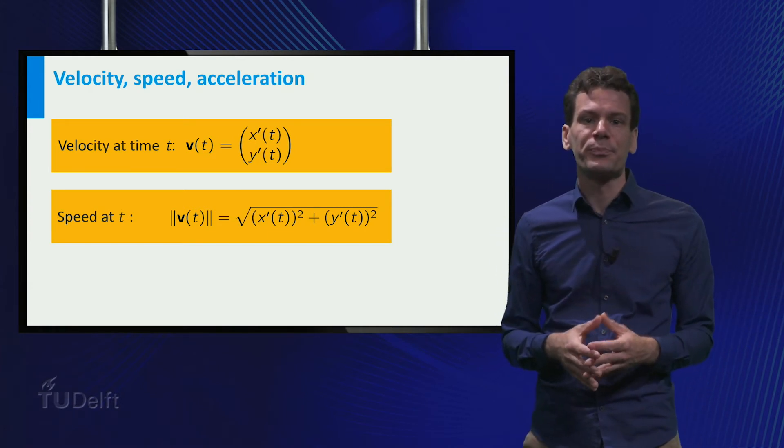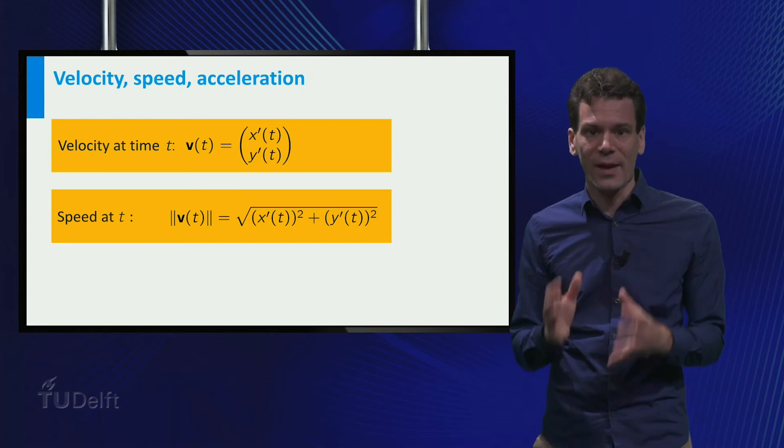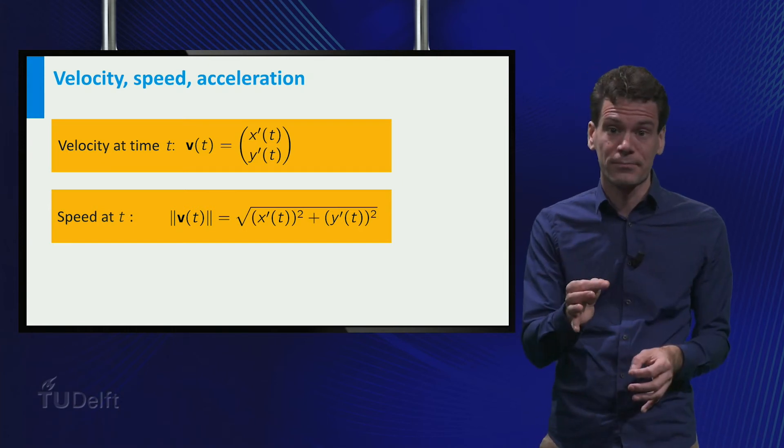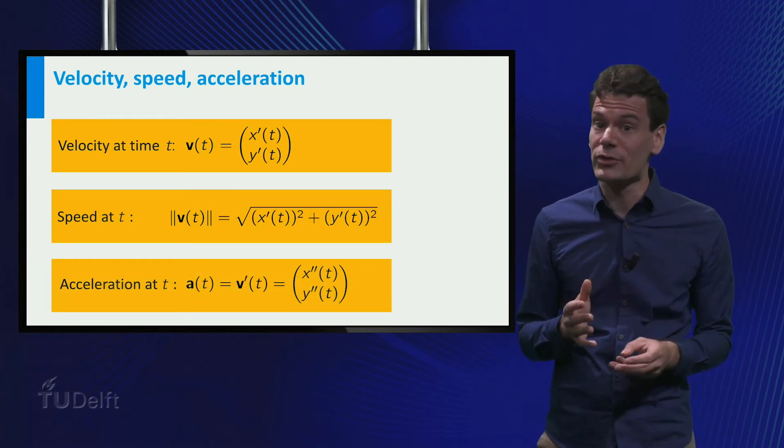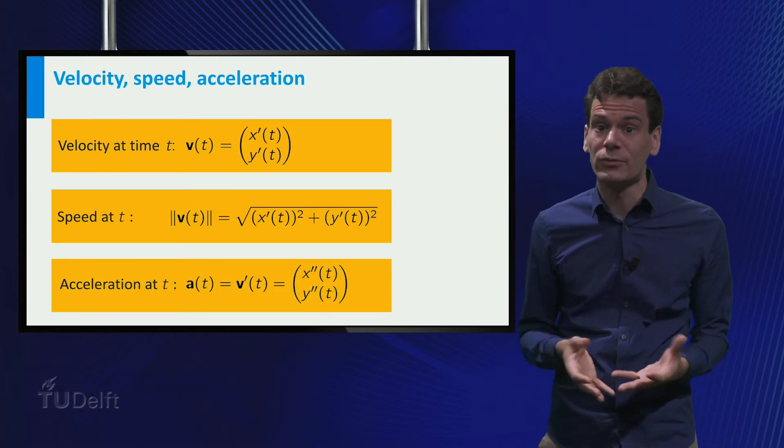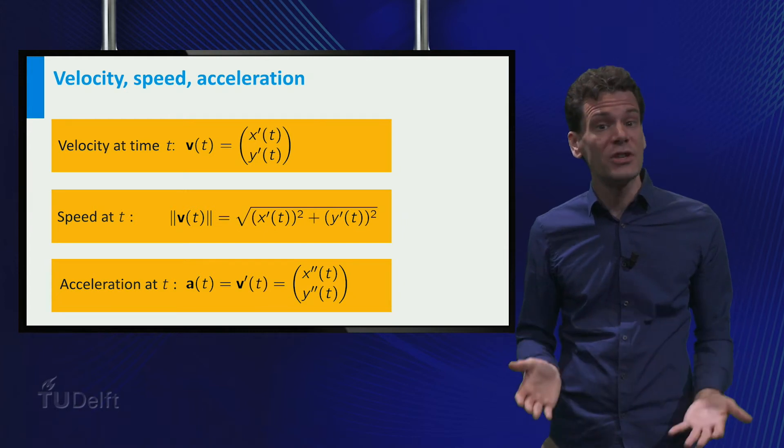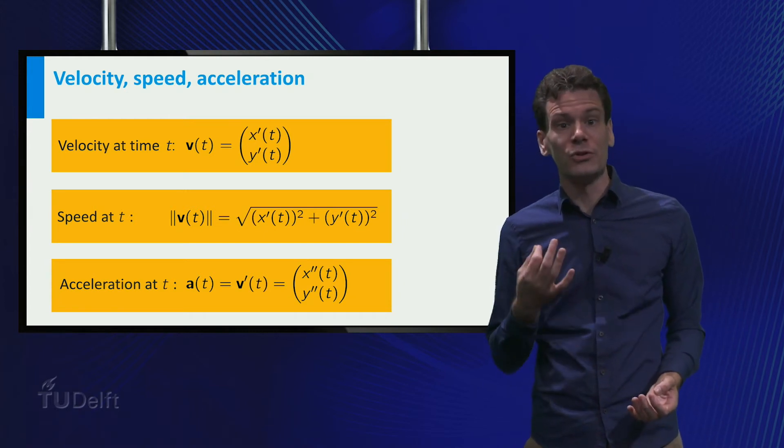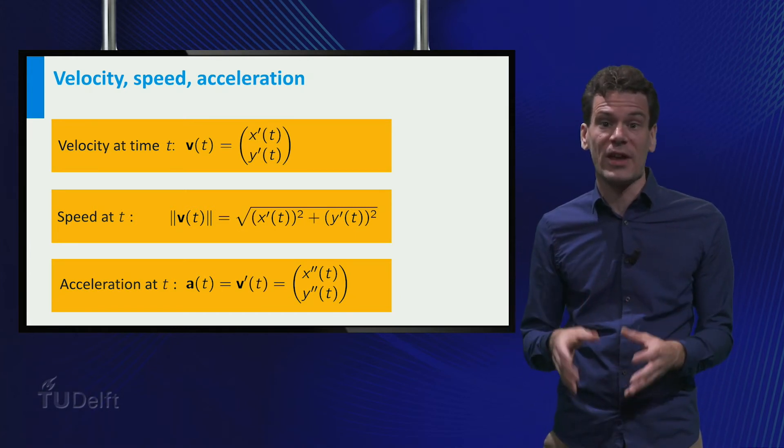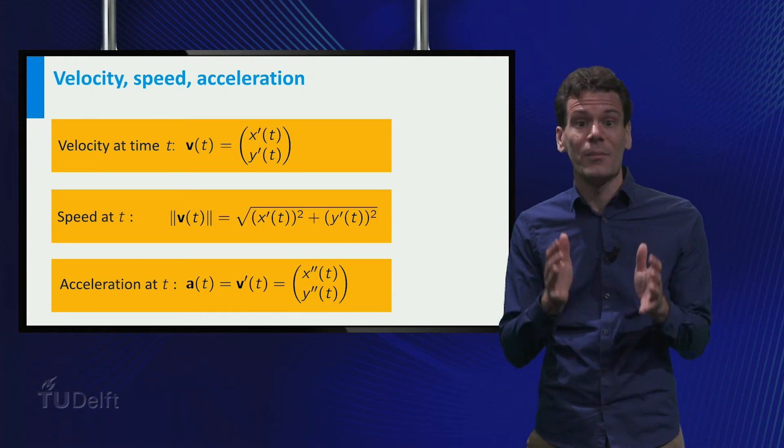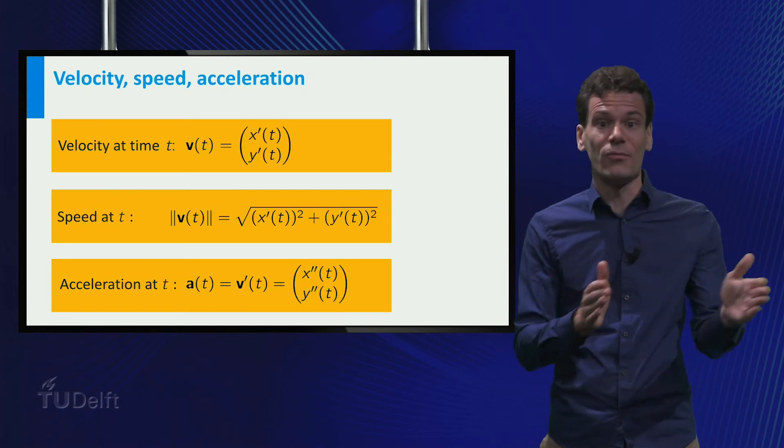So what about the acceleration? Well, this is defined as the rate of change of the velocity. It can be calculated by taking the time derivative of the velocity vector, so it is also equal to the second derivative of the position vector. It is important to note that the acceleration vector not only describes the rate of change of the speed of an object, but also the change in direction of motion.